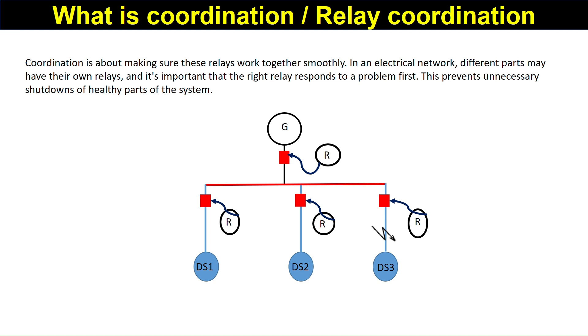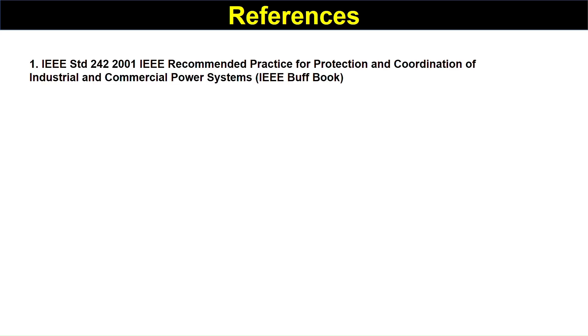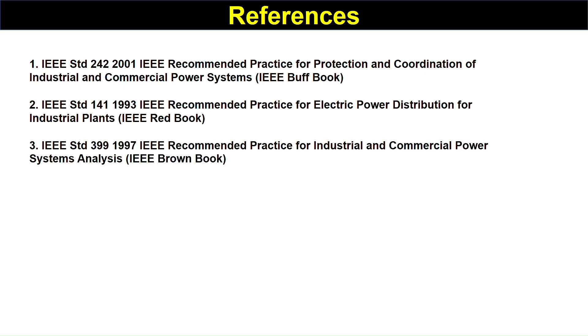Now what are the various references used in relay coordination and analysis? First one is IEEE 242-2001, that is called the buff book, or best practice for protection and coordination of industrial and commercial power systems. Second is IEEE 141-1993, recommended practice for electrical power distribution for industrial products - this is called the red book.